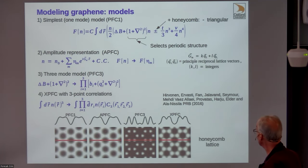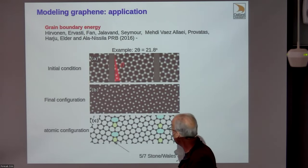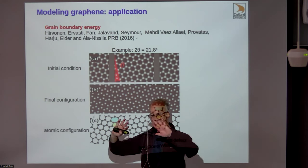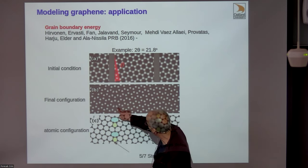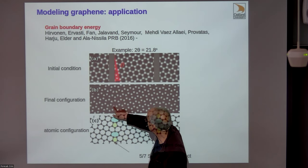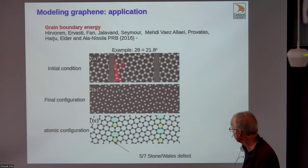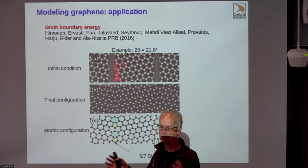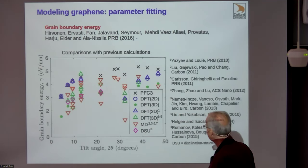We wanted to study grain boundary energy. We start with two crystals rotated by some angle, put liquid between them, let it solidify, and a grain boundary forms with classic 5-7 Stone-Wales defects. But when we did these calculations and compared grain boundary energy versus misorientation, the results from different papers were all over the map. We had parametrized our model by fixing the Young's modulus to agree with graphene—about a terapascal—but the comparison was a mess.